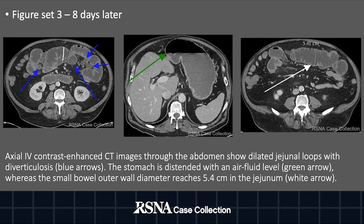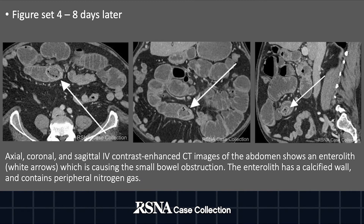Eight days later, axial IV contrast-enhanced CT images through the abdomen show dilated jejunal loops with diverticulosis. The stomach is distended with an air-fluid level, whereas the small bowel outer wall diameter reaches 5.4 cm in the jejunum. The white arrows show an enterolith on axial, coronal, and sagittal CT scan images through the abdomen, which is causing the small bowel obstruction. The enterolith has a calcified wall and contains peripheral nitrogen gas.